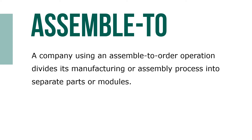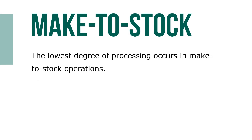A moderate degree of processing occurs in assemble-to-order operations. A company using an assemble-to-order operation divides its manufacturing or assembly processes into separate parts or modules. The company orders parts and assembles modules ahead of customer orders, then based on actual customer orders or on research forecasting what customers will want, the modules are combined to create semi-customized products.